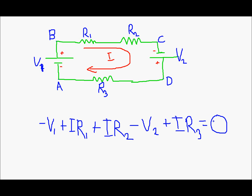We solved it. Now let's say I am travelling from D going to C, from C to B, from B to A and then back to D. I will take this as my path: D to C, C to B, B to A and A to D. I will write the equation again.